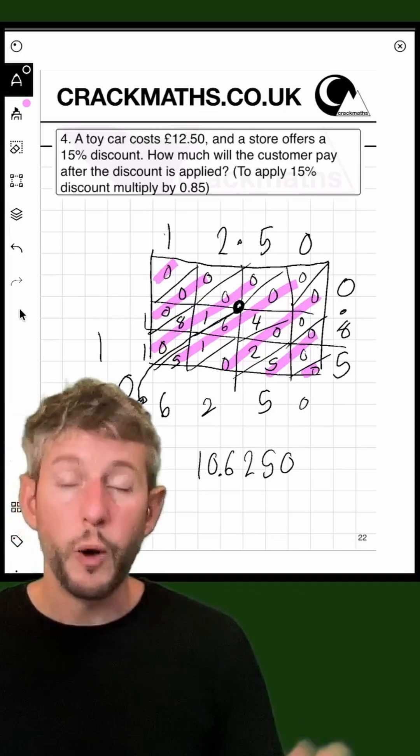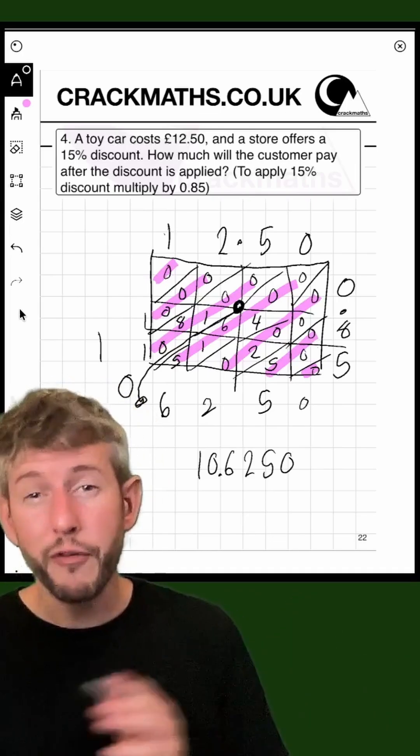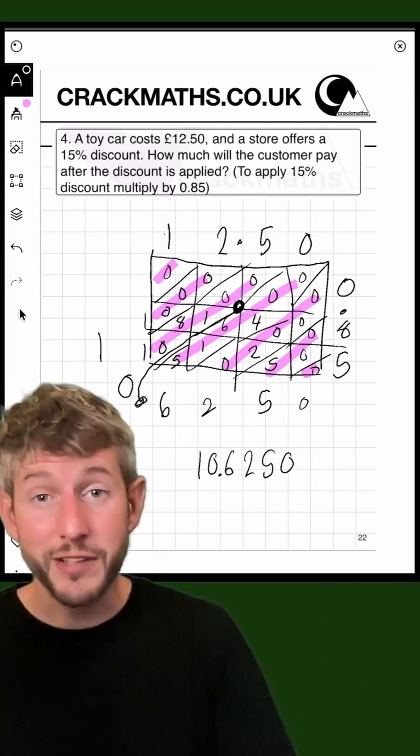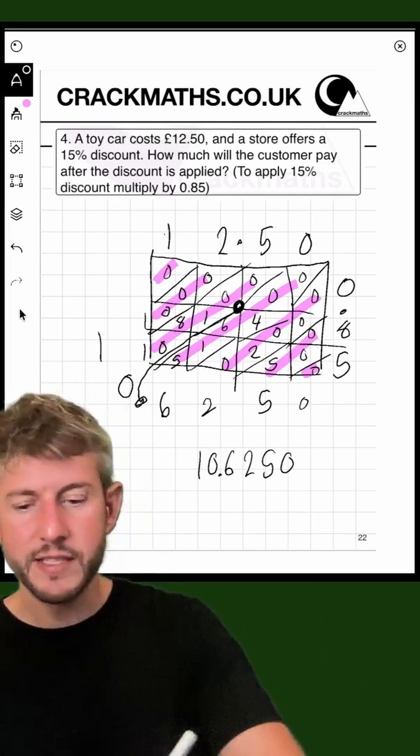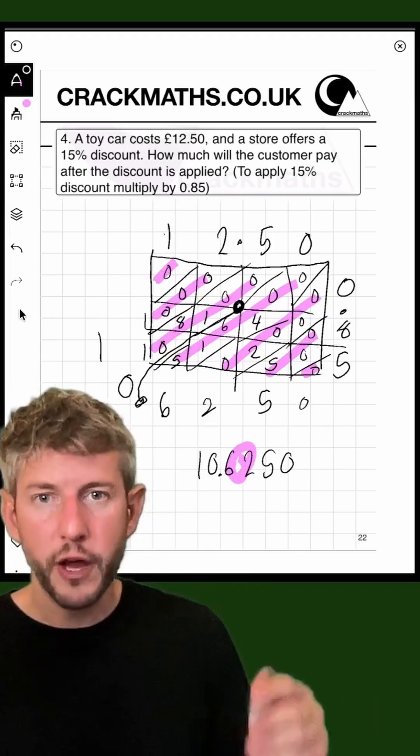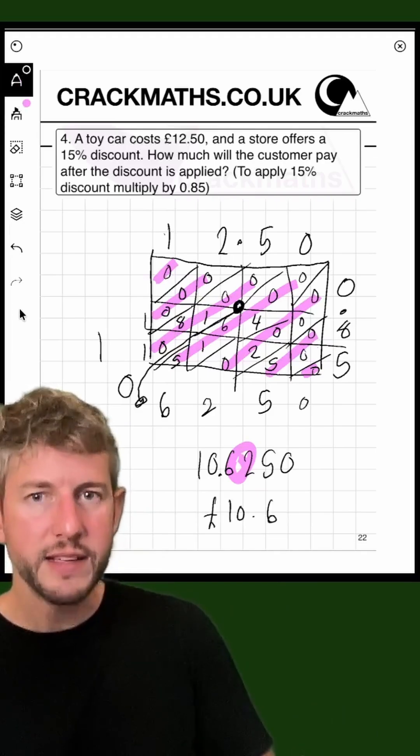So the answer to multiplying these two decimals is 10.625. However, this is a money question. So £10.625 doesn't exist. So we're going to have to round this number to two decimal places, which means we're going to go up because five goes up. So we're going to be looking at £10.63.